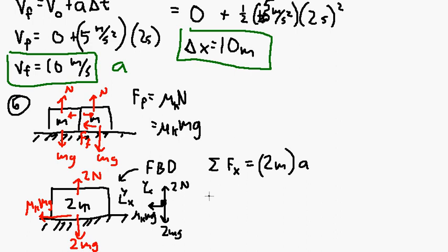So that just means negative mu kmg equals 2ma. This is almost looking too easy. So let's take and cancel our m's, and then we get, solve for acceleration, a equals negative mu kg divided by 2.